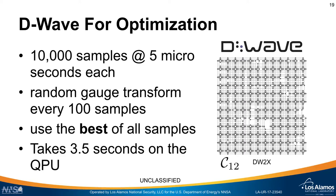For the D-Wave algorithm, we ask the computer to give us 10,000 different variable assignments, performing annealing for five microseconds for each sample. We do a random gauge transformation every 100 samples, and at the end of the run we return the best solution found. Not including the time to send a message to the D-Wave computer and back, this entire process takes about 3.5 seconds — that's roughly the runtime we see on the actual hardware.